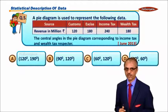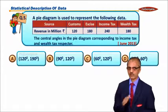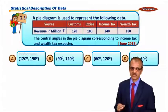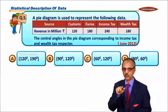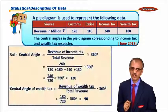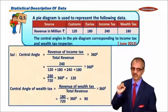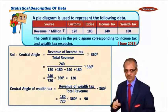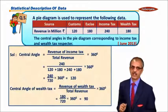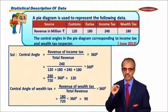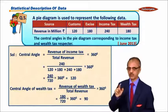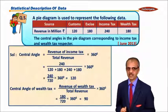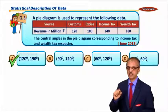The next one, question number 5: a pie diagram is used to represent the following data. Now central angles in the pie diagram corresponding to income tax and vertex. Income tax is 240, total is 720. So 240 upon 720 into 360, your angle is 120. And for vertex, 180 upon 720 into 360, your answer is 90 degrees. So your answer in this case is A.